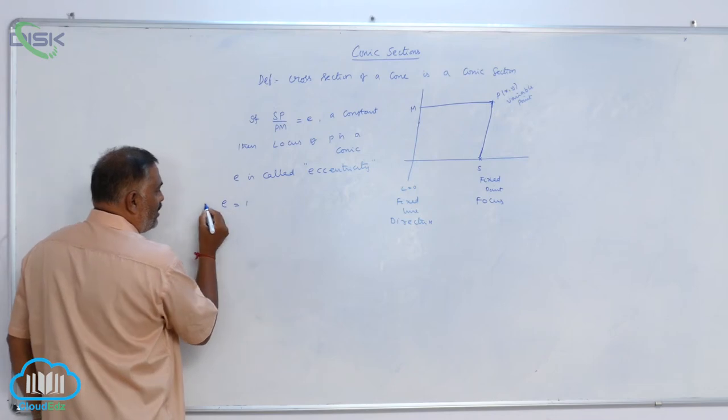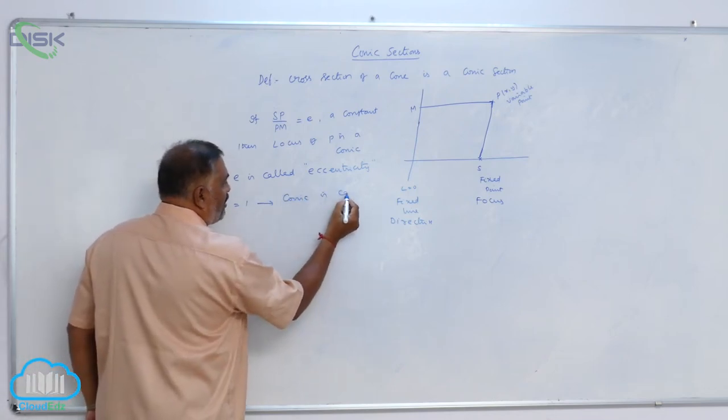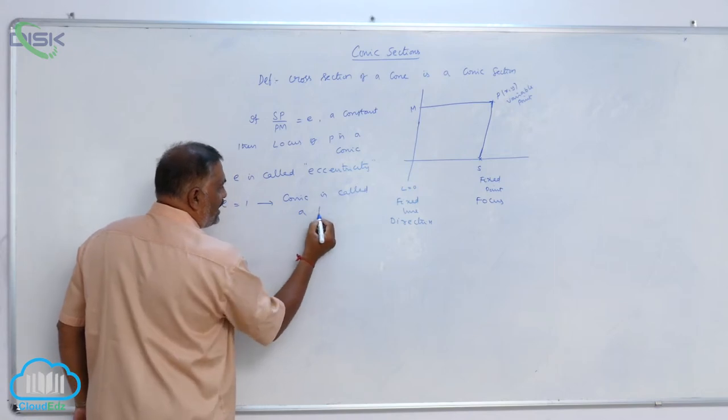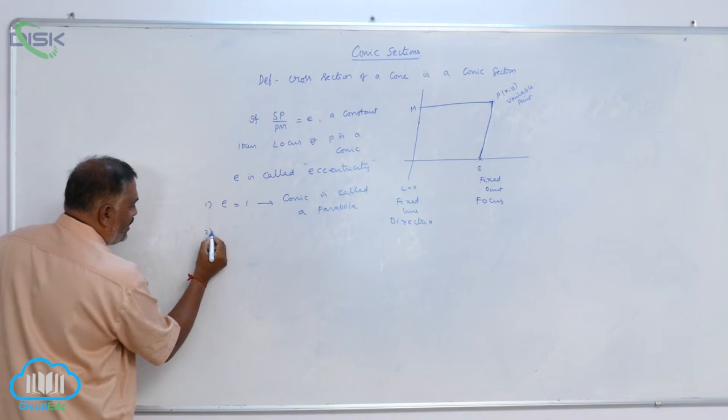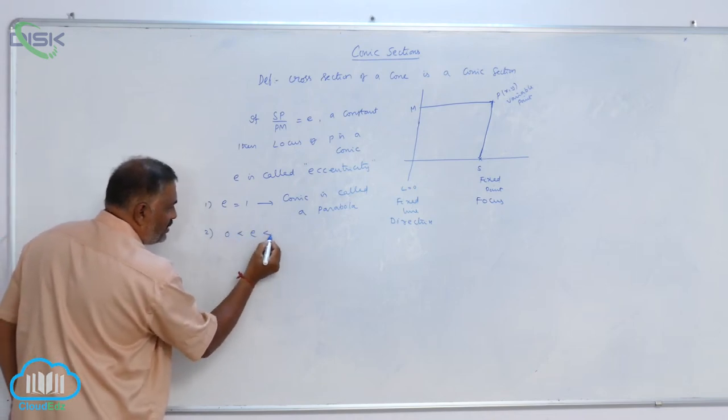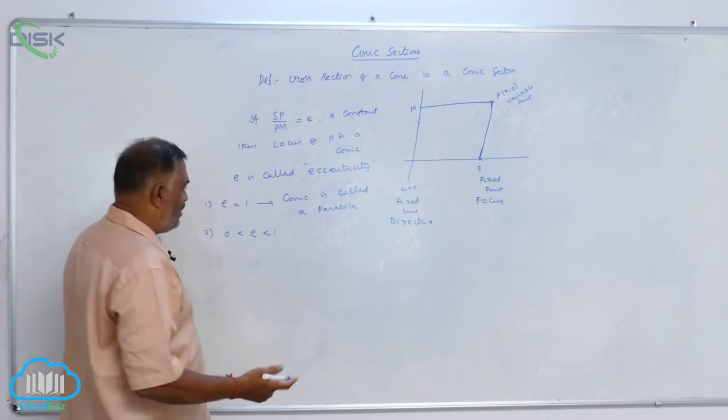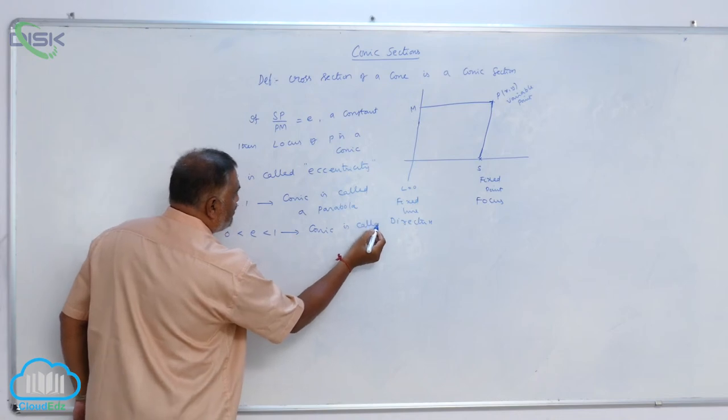If E is equal to 1, then conic is called a parabola. Second one, E lies between 0 and 1. That means, E less than 1. Then, conic is called an ellipse.